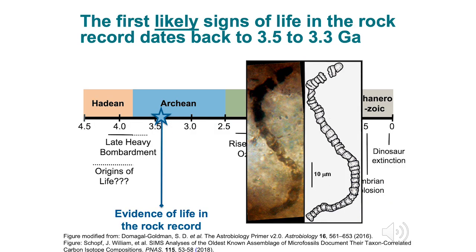We know that life probably took hold in the Archean Eon because there is evidence of life in the rock record. The first likely signs of life in the rock record start around 3.5 to 3.3 billion years ago. Here is an image showing a microfossil from a rock in Western Australia, which dates back to that time.